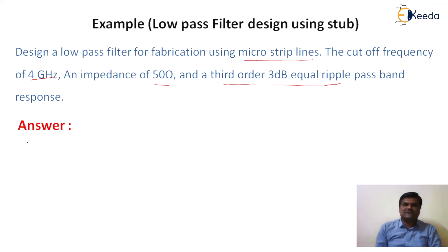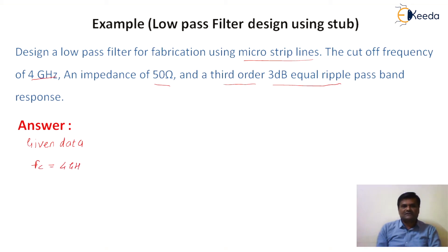First, we write the given data. Our aim is to design a low-pass filter using microstrip line. Cutoff frequency fc is equal to 4 GHz, impedance R0 equal to 50 ohm, third-order with n equal to 3, and it is a 3 dB equal ripple type of filter.